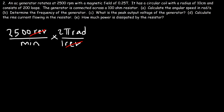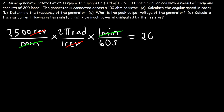To convert RPMs to radians per second, multiply by 2π and then divide by 60. Applying this to 2500 RPM gives an angular speed of 261.8 radians per second. That's the answer for part a.